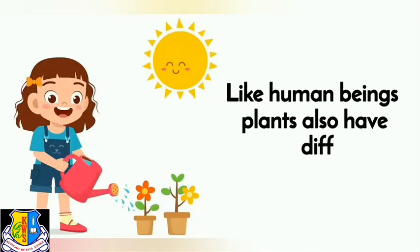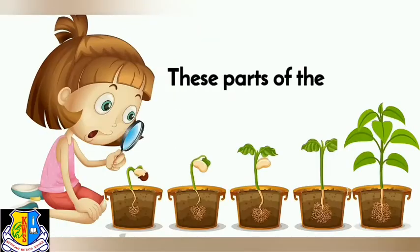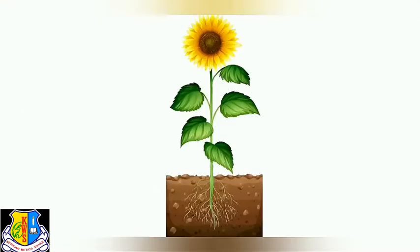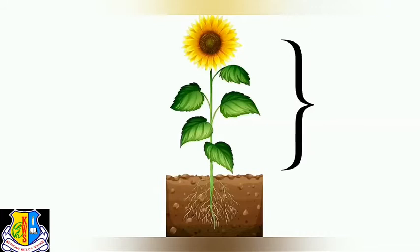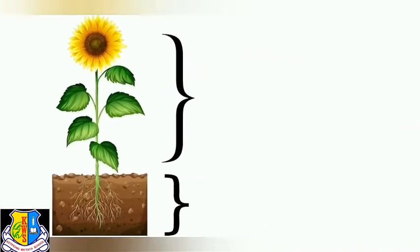Like living beings, plants also have different parts. These parts help them grow, survive and reproduce. Some parts of the plants are above the ground, while some are below the ground.